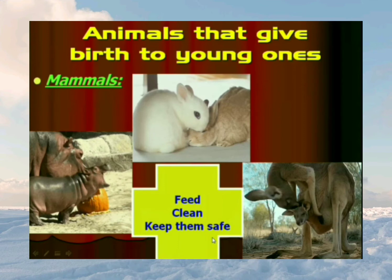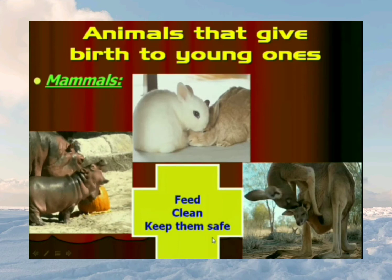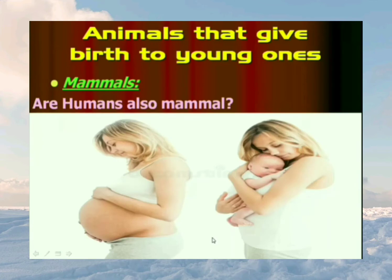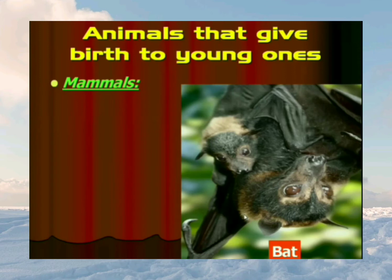Mammals take good care of their young ones — they feed them, clean them, and keep them safe until they have learned to look after themselves. Humans are also mammals because the human female gives birth to a baby. A bat is also a mammal, and it is the only mammal that can fly. A bat lives in old buildings or caves, gives birth to young ones, and the mother bat feeds the babies on its milk.